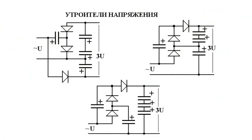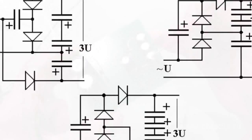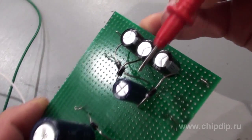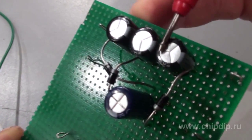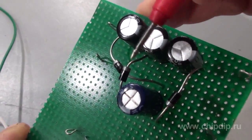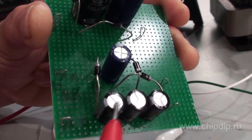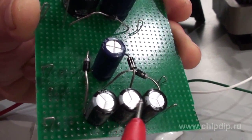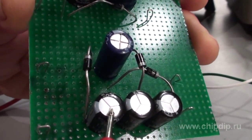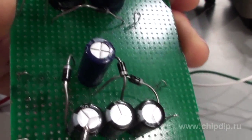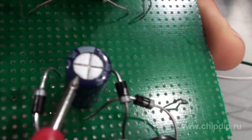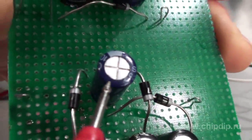The second scheme is an asymmetric voltage tripler. It uses four capacitors and three rectifier diodes. Each capacitor in the circuit, except the first one, is charged in sequence, and therefore the input voltage is tripled. The first capacitor is charged to the nominal input voltage.